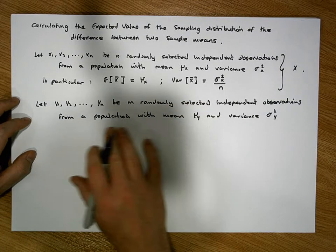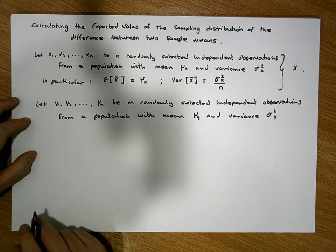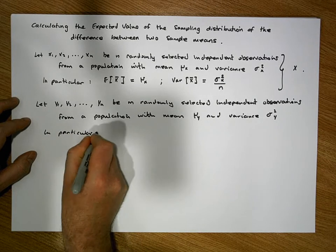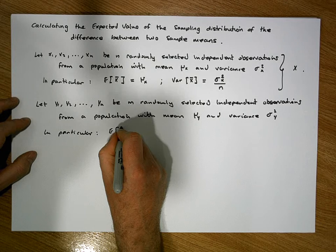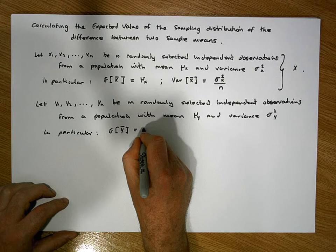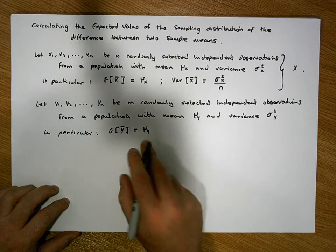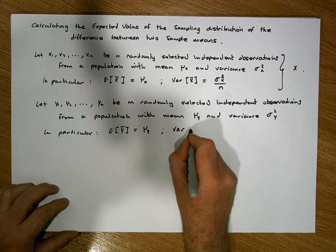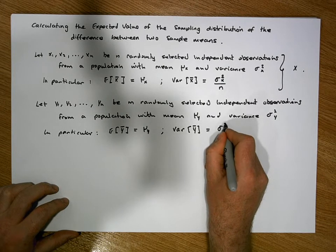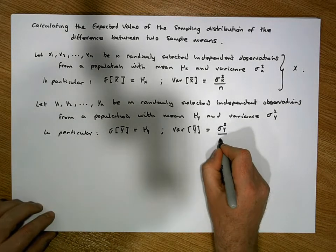The sampling distribution associated with the sample mean of this variable y is going to have a particular expectation and variance. The expected value of the sampling distribution for y bar is equal to mu of y — it's an unbiased estimator of the population mean — and the variance of y bar is equal to the population variance sigma squared of y divided by the sample size m.